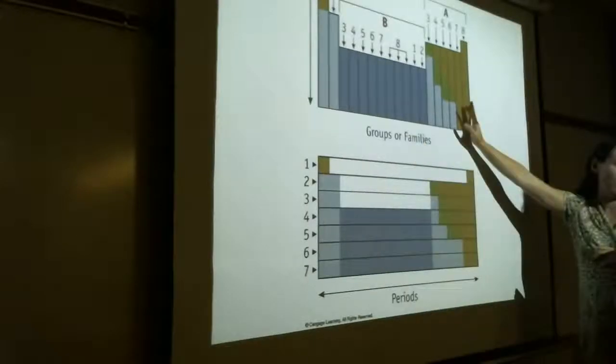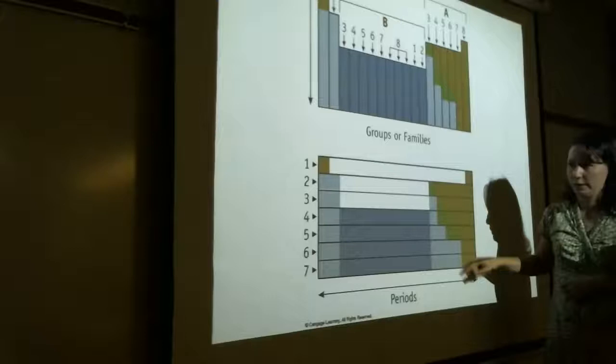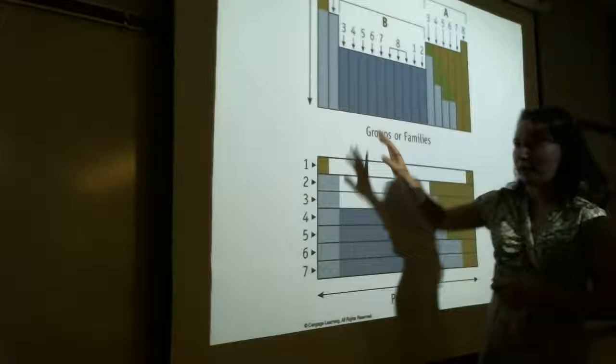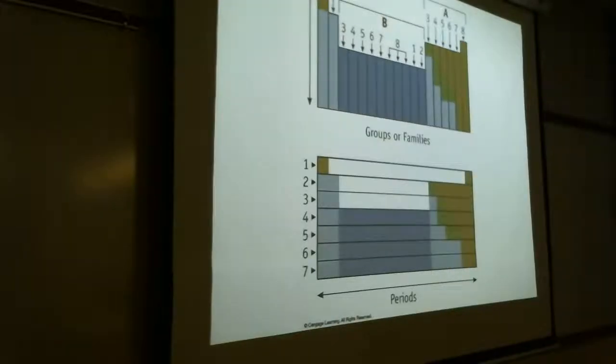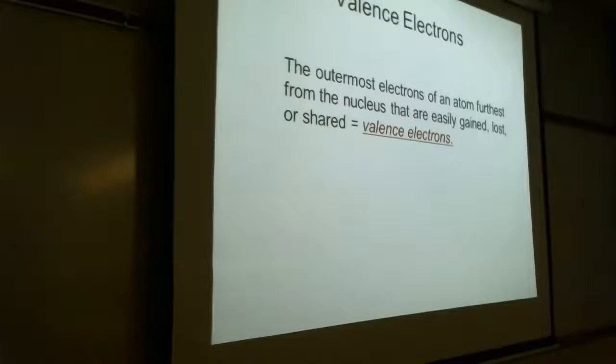Let's also talk about organizing the periodic table. A vertical column is called a group or a family — it makes no difference which term you use. We're going to use the A notation, so group one through eight go across the main groups. Horizontal rows are called periods. Periods go horizontally, groups go vertically.